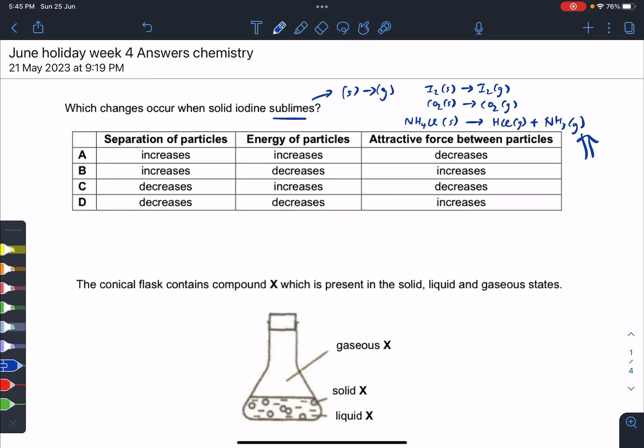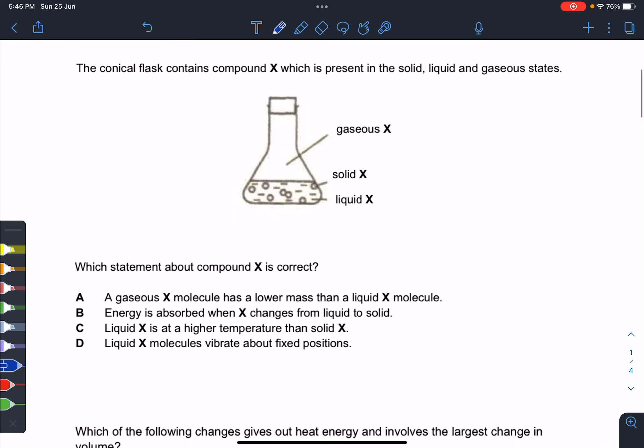Separation of particles: when you change from solid to gas, it will increase. Energy of particles will also increase. Your solid is described as vibrating about fixed position—they barely move—whereas gases are described as moving at high speed in random directions, so they have higher energy and the forces between them are lower. That's why they are far apart compared to the solid state, which is closely packed in an orderly manner.